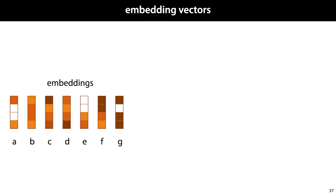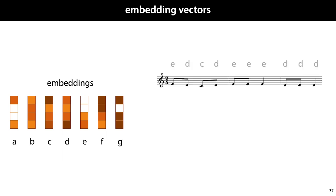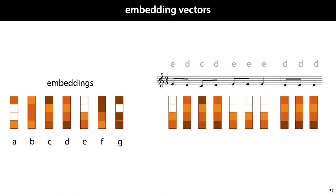An alternative method is to use embedding vectors. The idea here is that you assign each input symbol in your vocabulary a vector of random values. You then translate a symbolic input sequence into a sequence of vectors by mapping the input symbols to their corresponding embedding vectors.